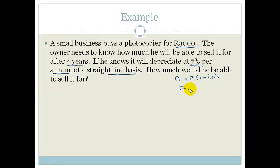The I is your interest at 7 divided by 100, which is 0.07, and your N is 4 years.